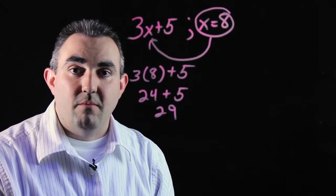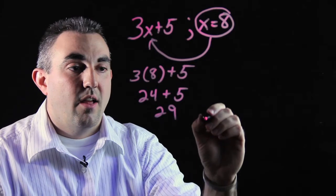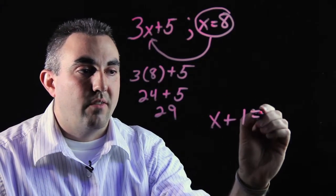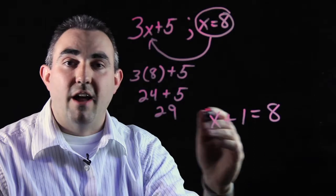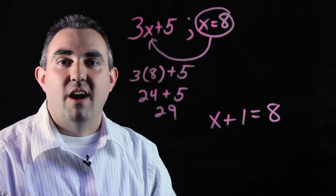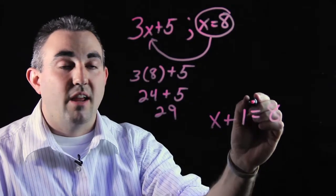The transposition method is slightly different. They do not tell you the value of x. So you'll have x plus 1 equals 8. Your job is to find out what x is by using inverse operations.